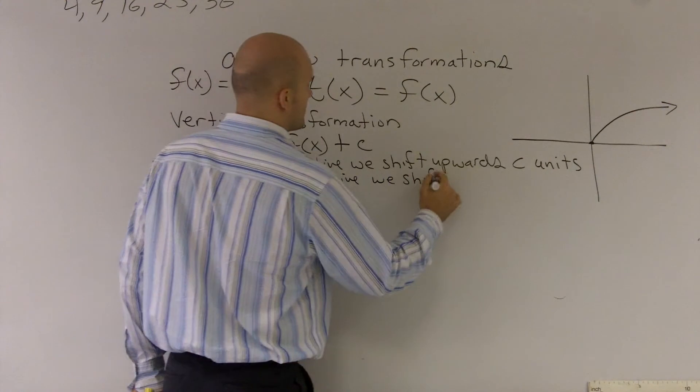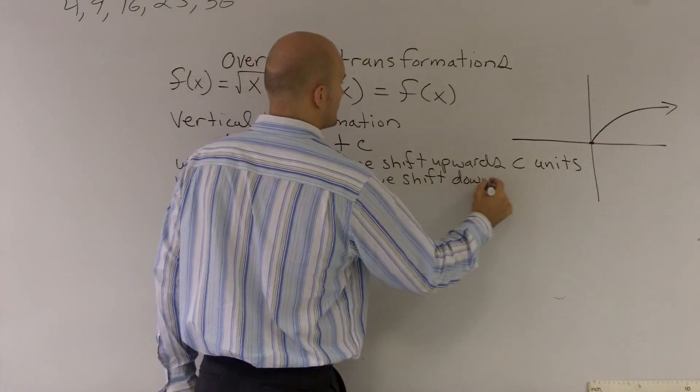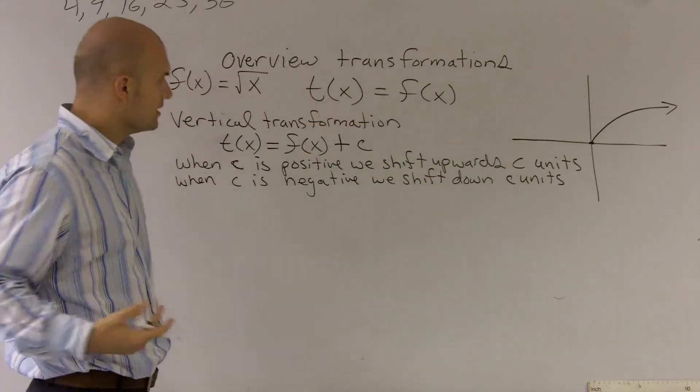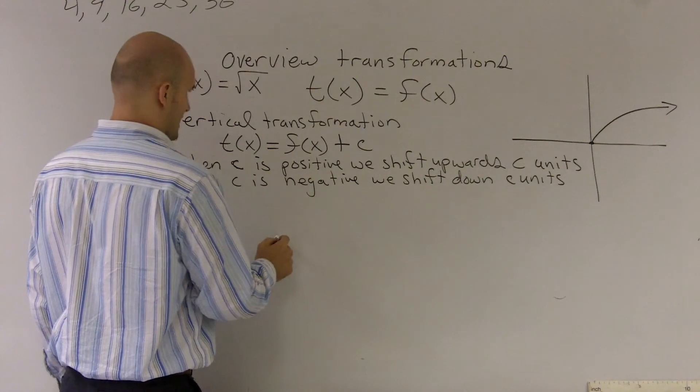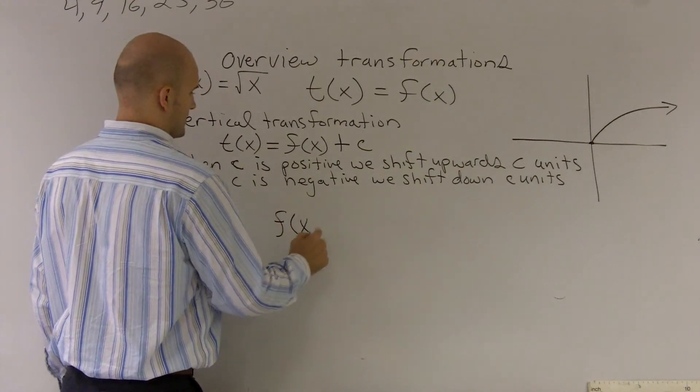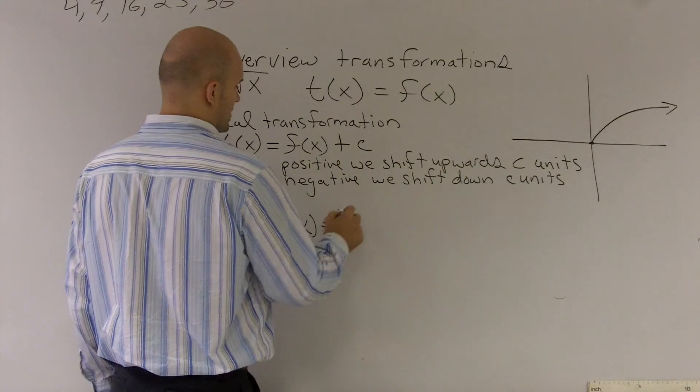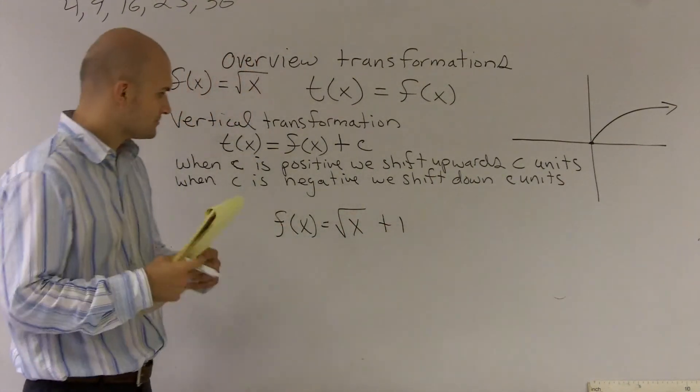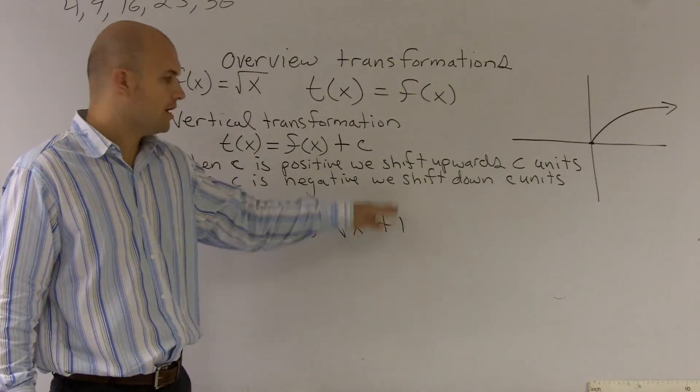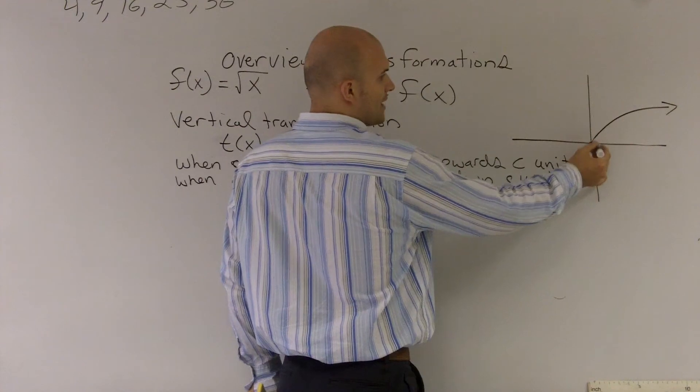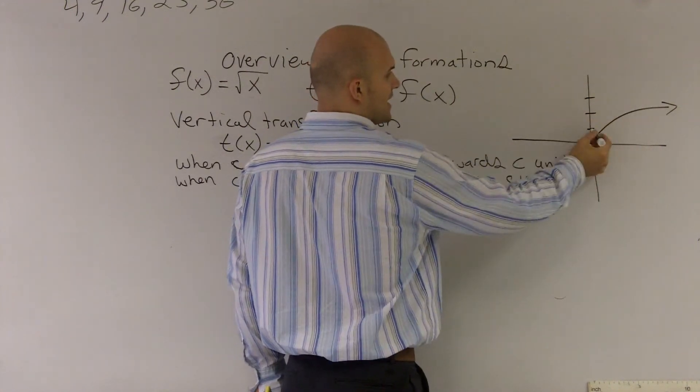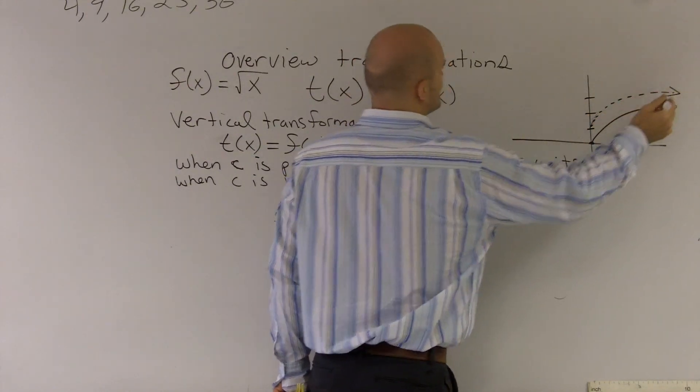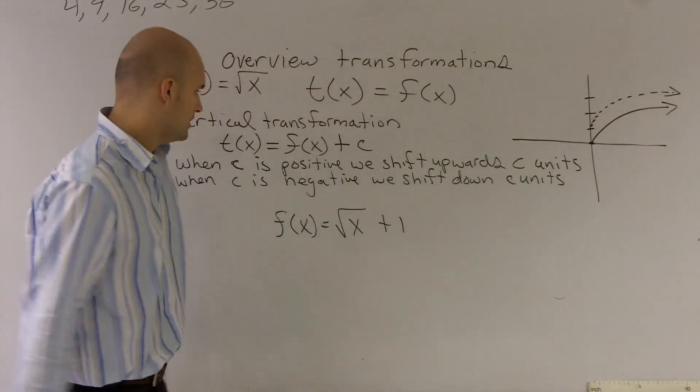For a couple examples, if I was going to say f(x) is equal to the square root of x plus 1, that would shift my graph up 1. So instead of starting at (0,0), I would now start at (0,1). I'll just graph, let me just do a dotted line here, and I'll just graph the exact same line. Let's do another example.